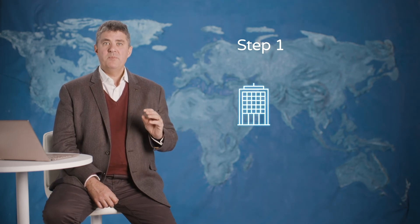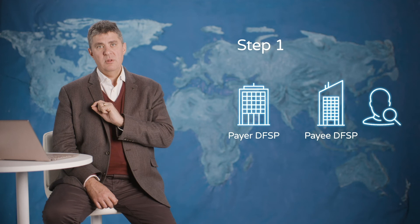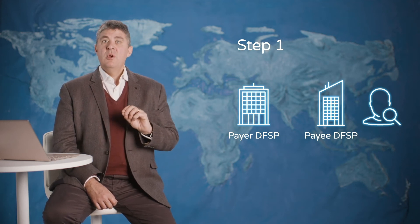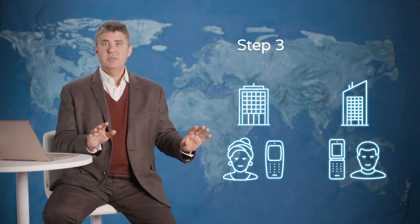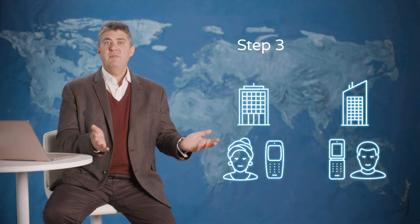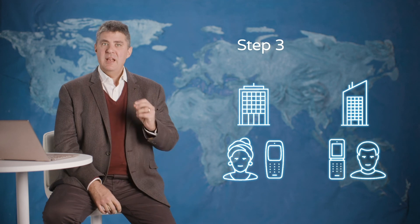Underneath the surface, Mojaloop has to do three things to make that happen. Step 1: After Gladys initiates the payment to John, Gladys' DFSP, as the payer participant, looks up which provider John's account identifier is registered with — that's the payee participant — and checks that the person with that identifier is in fact John. Step 2: The payer participant submits a quote to the payee participant for the transaction. The payee confirms any costs and confirms that the transaction meets their rules, creating a cryptographic deposit slip in the form of an ILP condition. Step 3: If all is well, Gladys confirms the transaction and Gladys' DFSP requests the transfer to John. Payer and payee participants, along with the Mojaloop switch, execute the cryptographically verifiable contract to immediately clear funds and allow John to spend his funds.